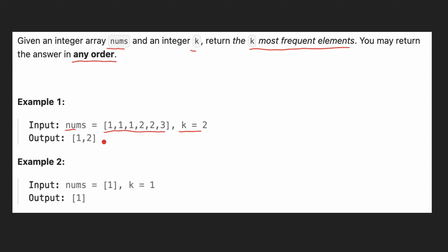For example, in this case, 1 is repeated three times, 2 is repeated twice, and 3 is repeated once. So the k most frequent elements are 1 and 2, and we are returning them. So how are we going to solve this problem?